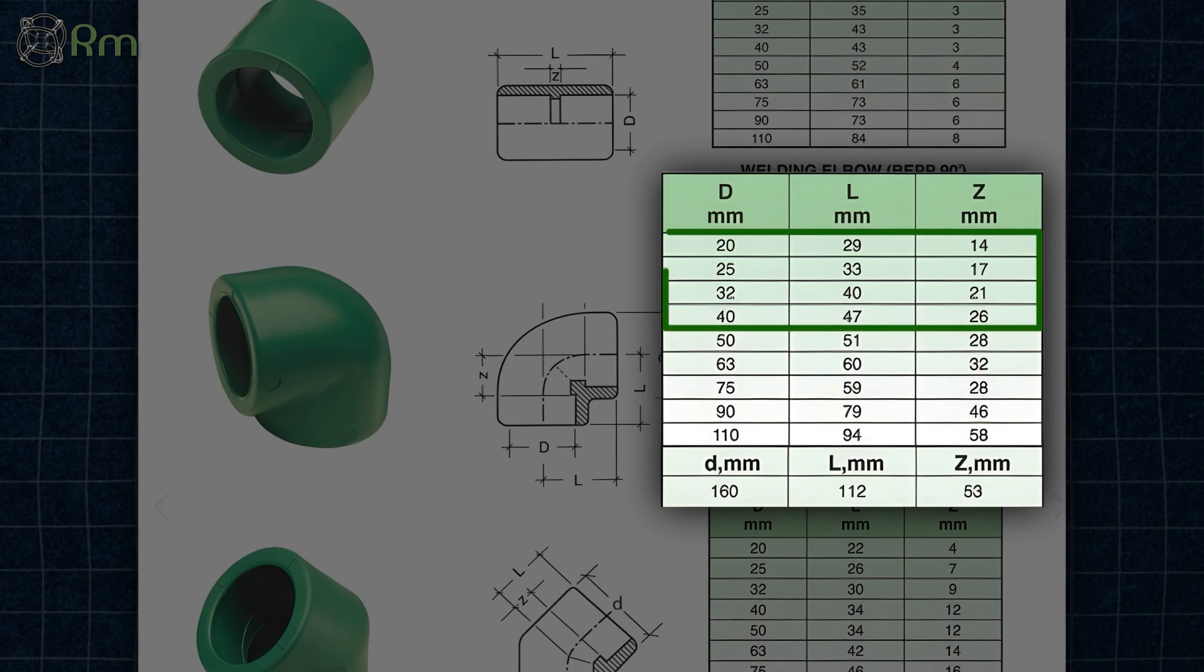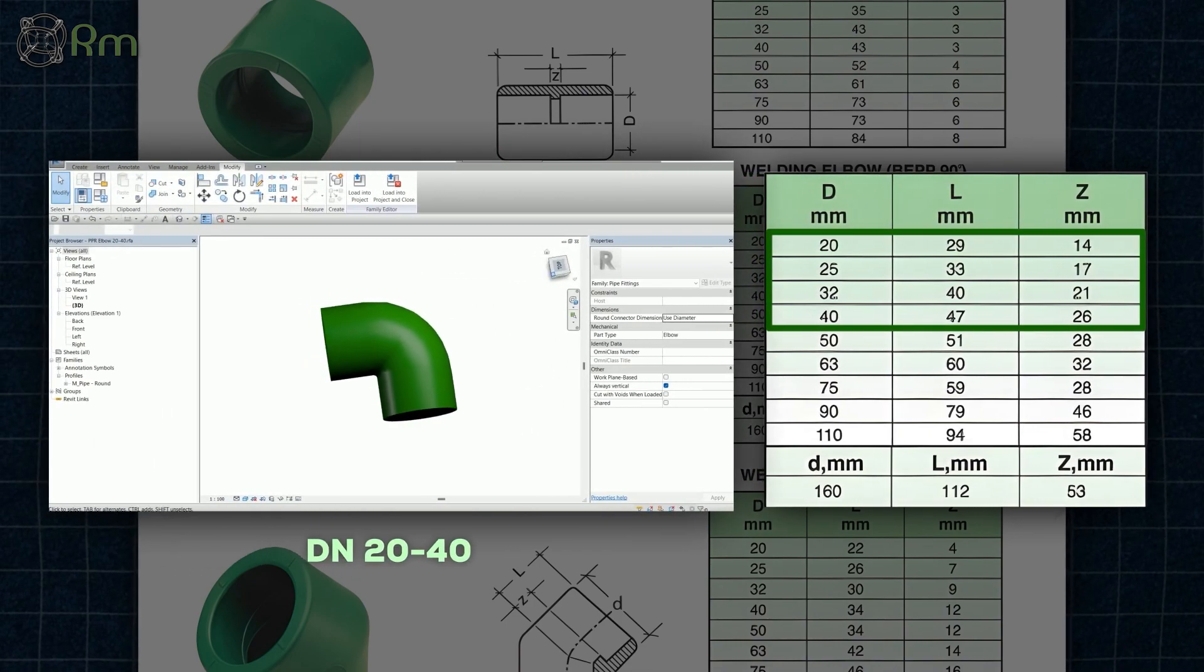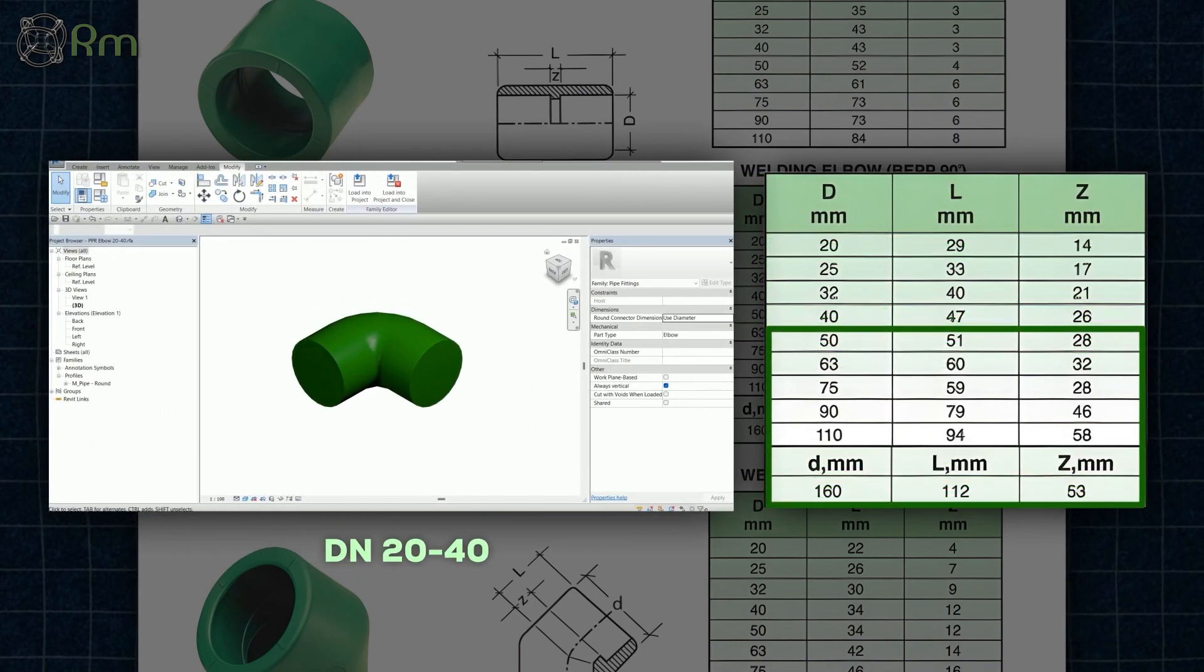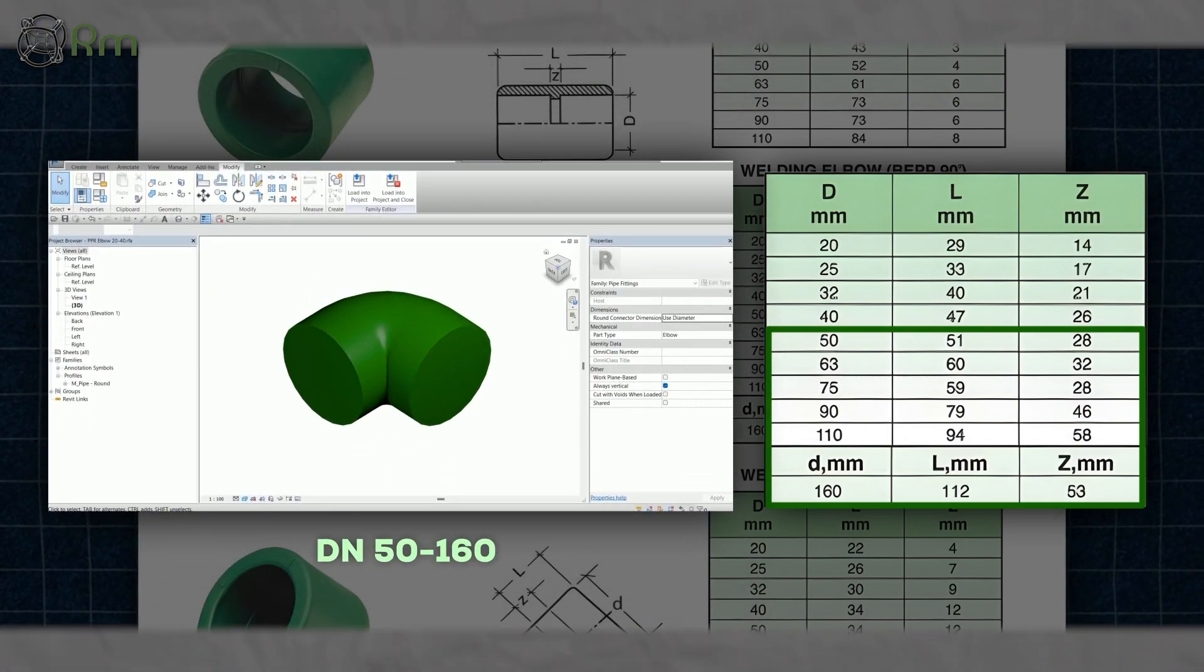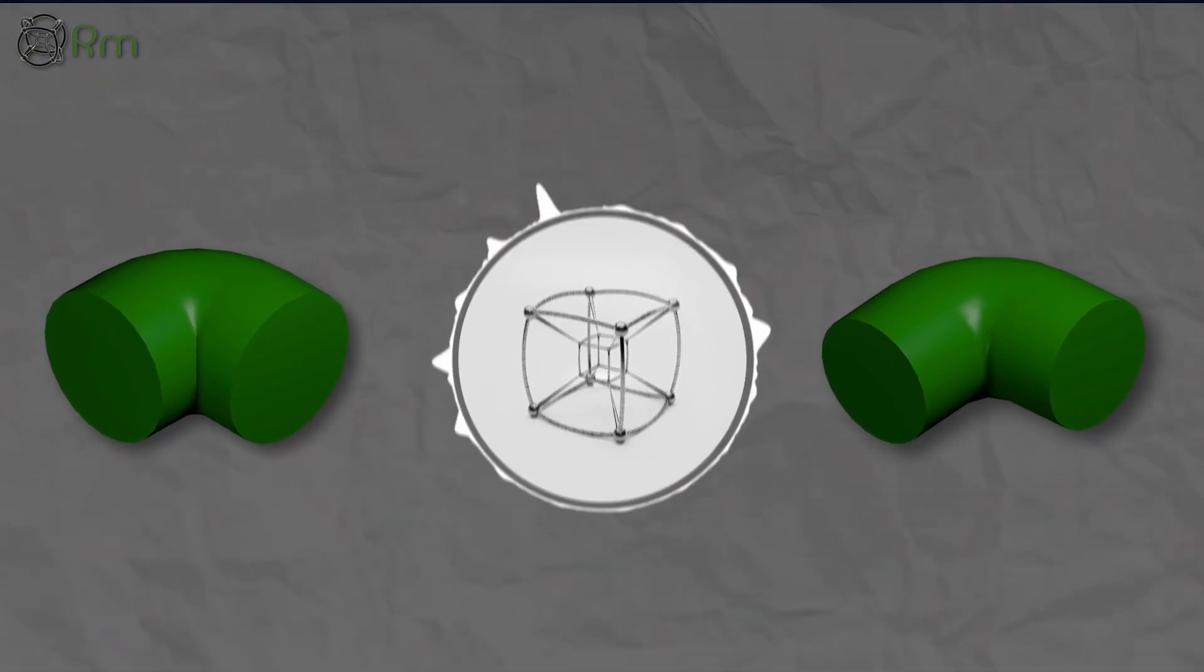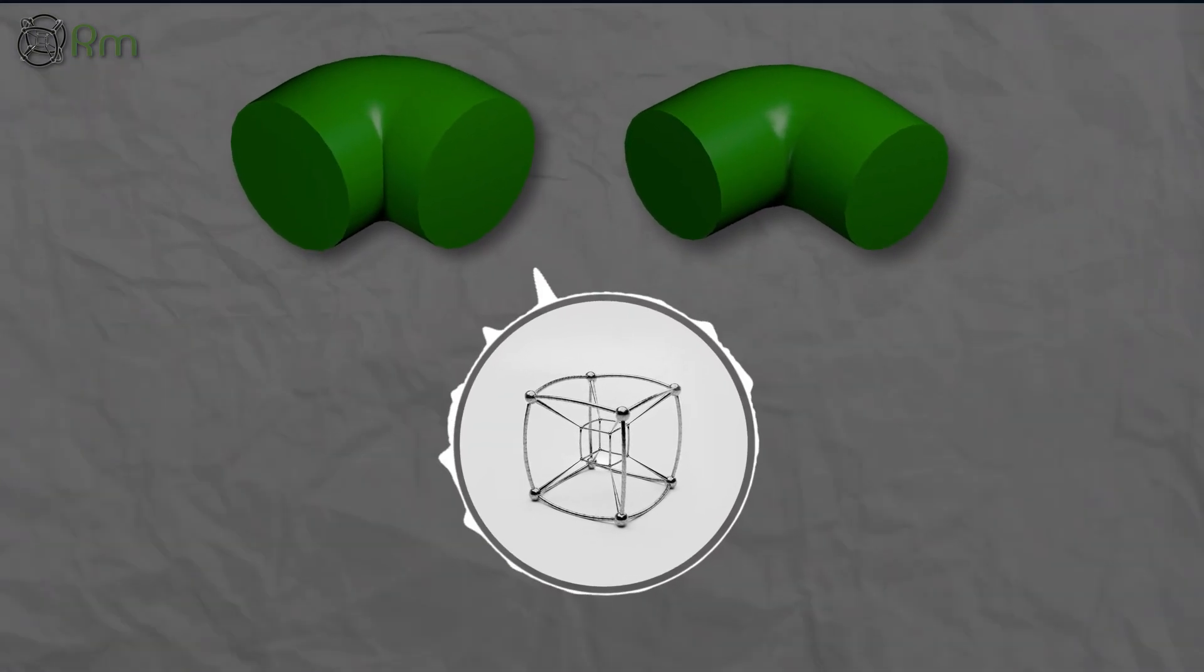Here, sizes from DN20 to DN40 have a geometry like this, whereas sizes from DN50 to DN160 look like this. Obviously, these two geometries are not the same, and the way to make these geometries aren't the same.